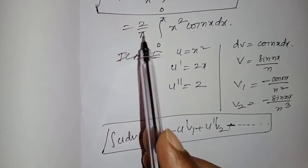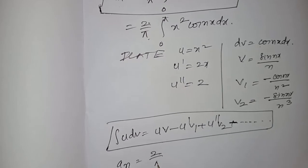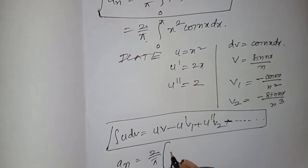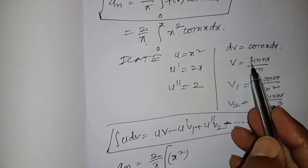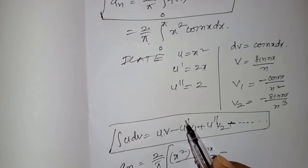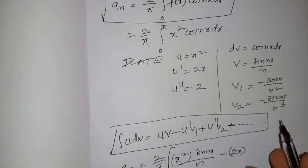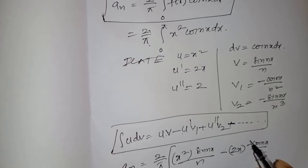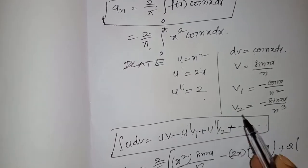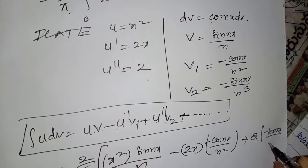Substituting into the Bernoulli formula (∫u dv = u·v - u'·v1 + u''·v2 - ...): an = (2/π) · [x²·sin(nx)/n - 2x·(-cos(nx)/n²) + 2·(-sin(nx)/n³)] from 0 to π.